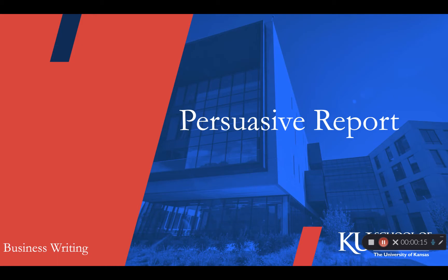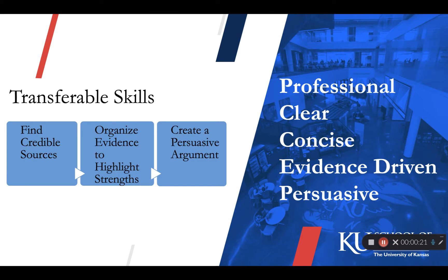Since we use this as an example, you cannot use Make-A-Wish for this assignment. Each assignment asks you to demonstrate your understanding of the core competencies of business writing. For this assignment, you are evaluated on five rubric categories.